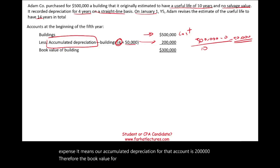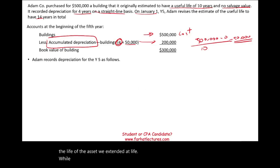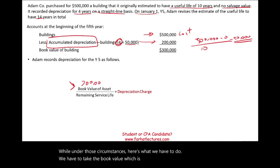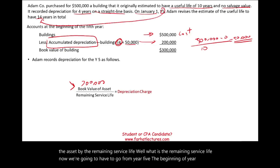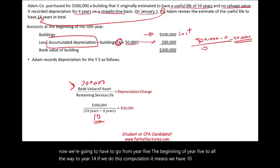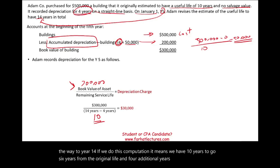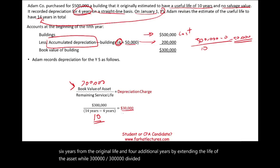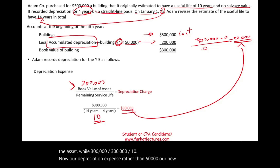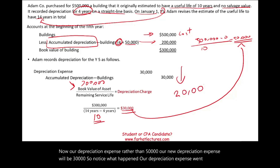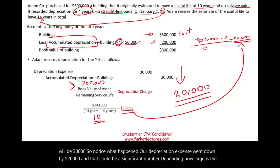Now we need to know what's going to happen going forward. We changed the life — we extended it. Under those circumstances, we take the book value of $300,000 and divide it by the remaining service life. From the beginning of year 5 all the way to year 14, we have 10 years remaining — six years from the original life plus four additional years from the extension. So $300,000 divided by 10 gives us a new depreciation expense of $30,000, rather than $50,000. Our depreciation expense went down by $20,000, which could be a significant number depending on how large the company is.